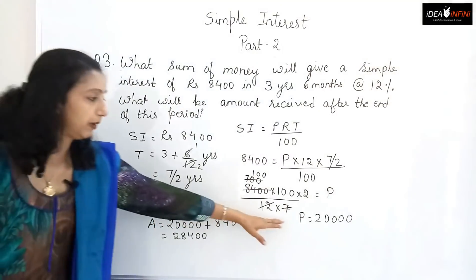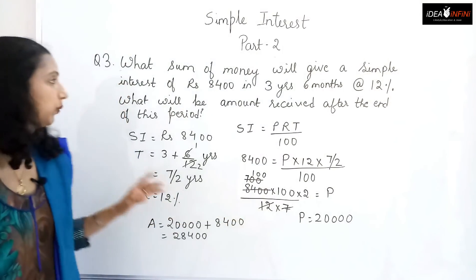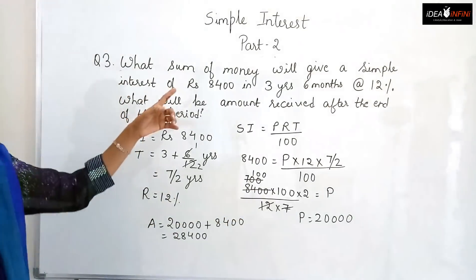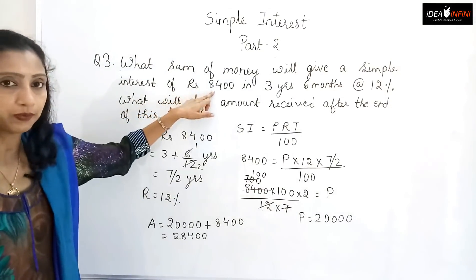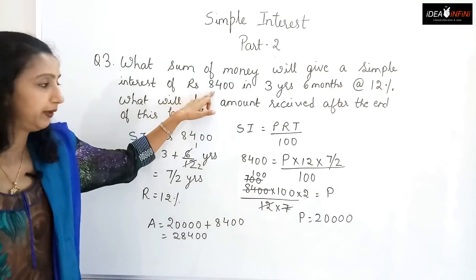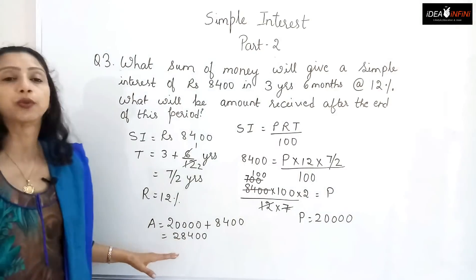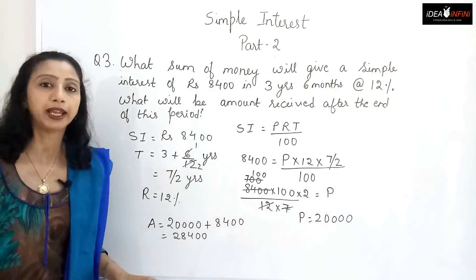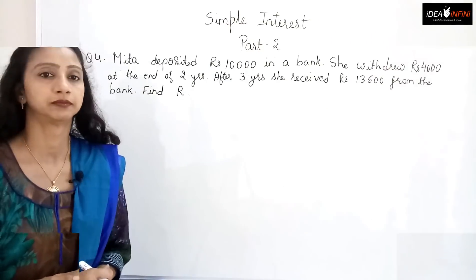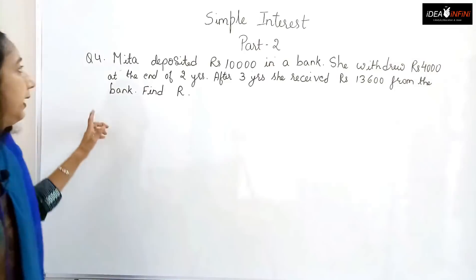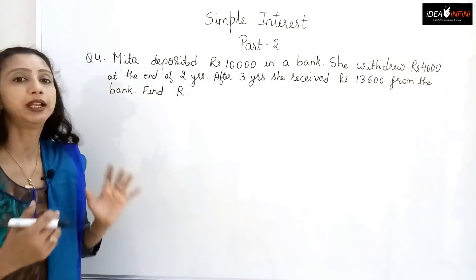So a principal of ₹20,000 deposited for three years and six months at 12% per annum gives a simple interest of ₹8,400, and the total amount received is ₹28,400.